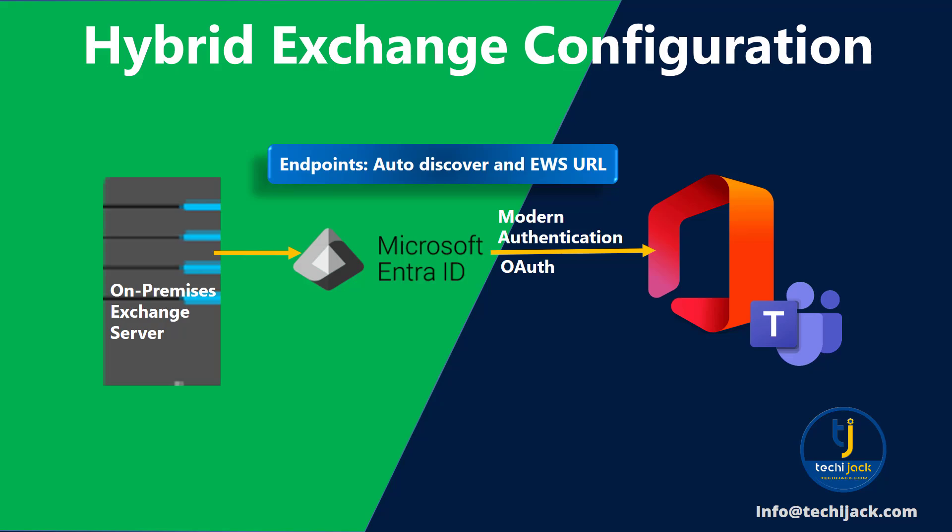In this configuration, you connect your on-premises Exchange to Microsoft 365 by using Microsoft Entra ID, formerly known as Azure AD, with modern authentication and some published Exchange endpoints like EWS and Autodiscover.